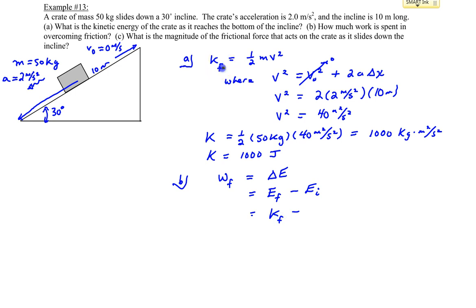The kinetic energy final that we found here. The initial energy of the block is made up of kinetic and potential, but we released it at rest. So it really only has potential energy initially.